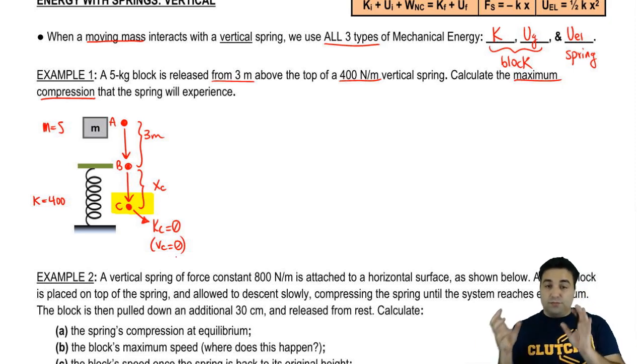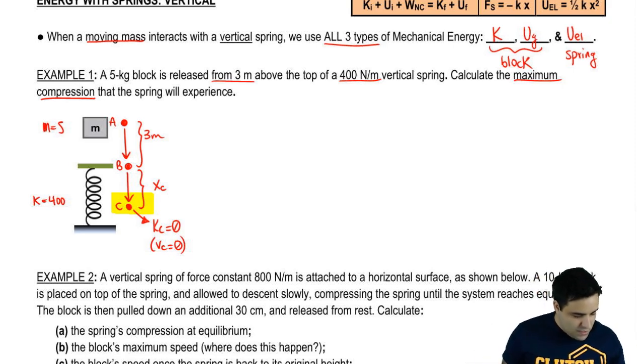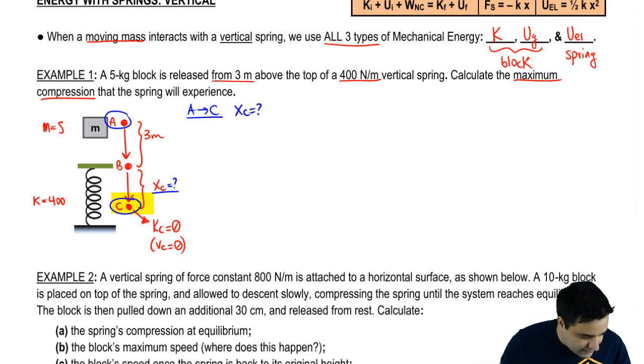Now, the energy equation is always from two points. You have to pick the two points. You know information about A, and you want information about C because you want to know what is this guy here. So we're going to write an energy equation from A to C to try to figure out what is XC.